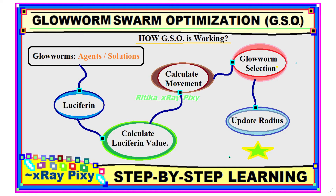There are certain phases that play a major role in this algorithm: luciferin calculation, movement calculation, neighbor selection for glowworms, position update, and then radius range update. Now let's try to understand how we calculate movement, select neighbors, and update position and range.